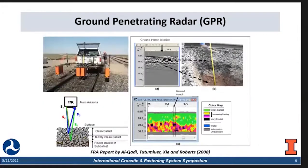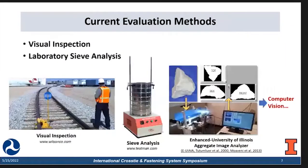We need some inspection tool approach to give us an index about where and when the ballast condition is bad, so that we can initiate maintenance activities. In terms of network-level inspection, we have the ground penetrating radar GPR technique, which can give us a high-level idea about which areas the ballast condition is probably not good, so that we can do more detailed inspection in those areas. For the detail inspection at the project level, we have the visual inspection approach, which is somewhat subjective. We also have laboratory sieve analysis, which requires field sampling. In addition, we can also do image analysis on those field samples.